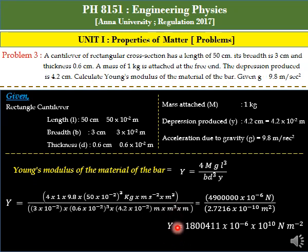Young's modulus capital Y equals 1,800,411 times 10 to the power minus 6 times 10 to the power 10 newton meter to the power minus 2.